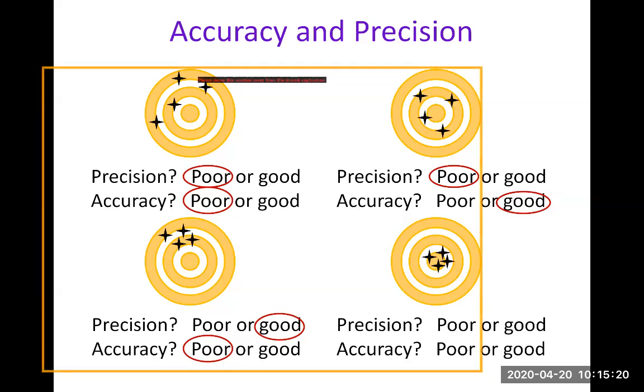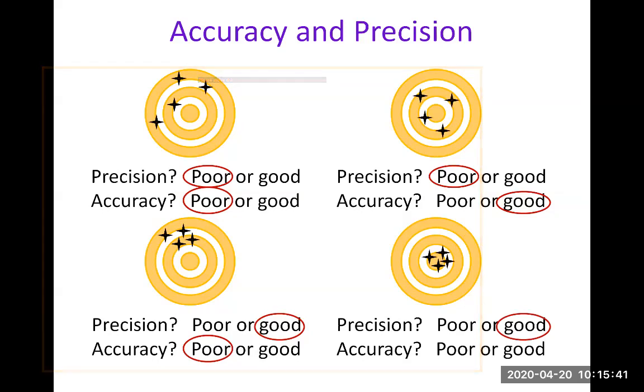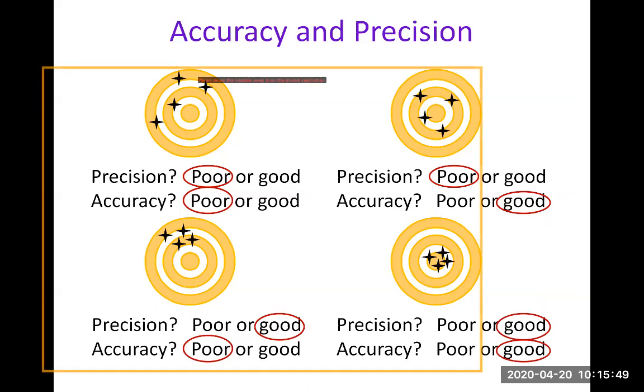So let's move to the bottom right target. What do you think of precision? Yes, precision is pretty good. Those four shots are clustered together. And then accuracy. Yes, accuracy is also good. That's really the best case scenario, right? When all your shots are clustered together and they're clustered around the target value, the center of the target here.